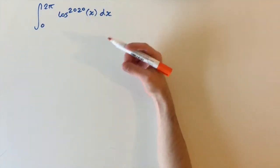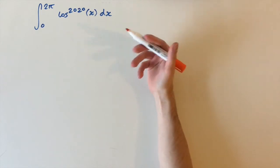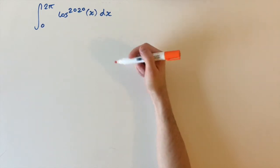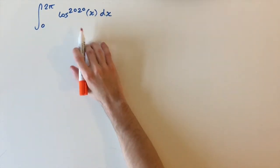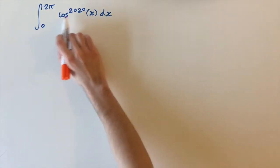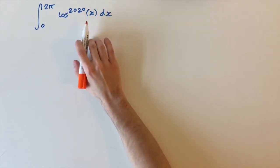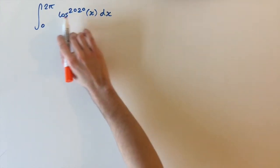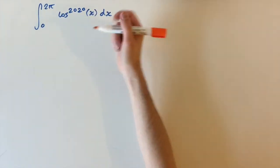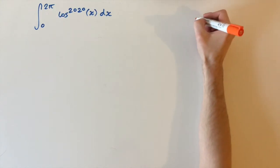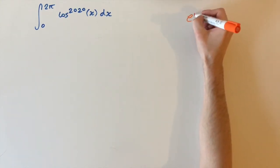Now this is a really innocent looking integral but it turns out it's really hard to solve. We can't integrate cosine to this high power straight away, but we're going to try and express cosine of x in another way using Euler's formula.